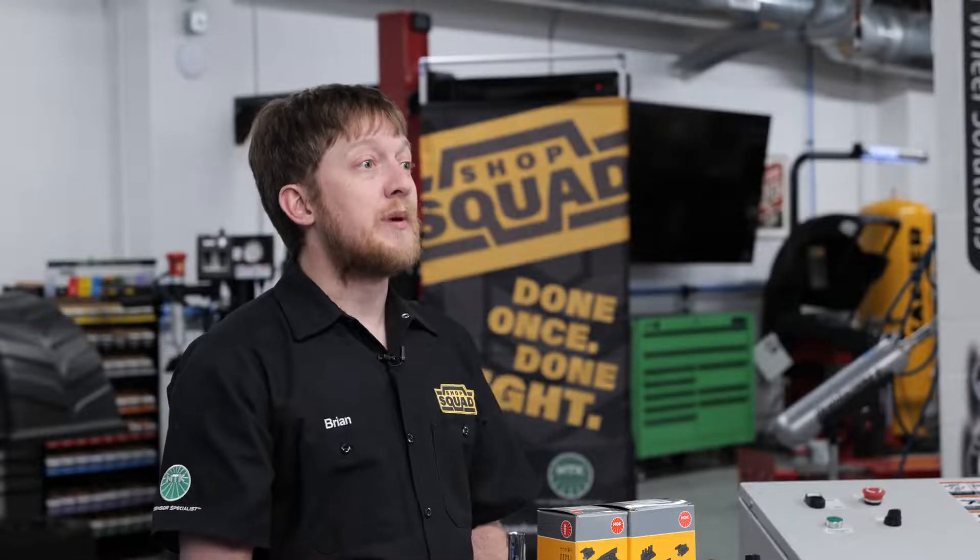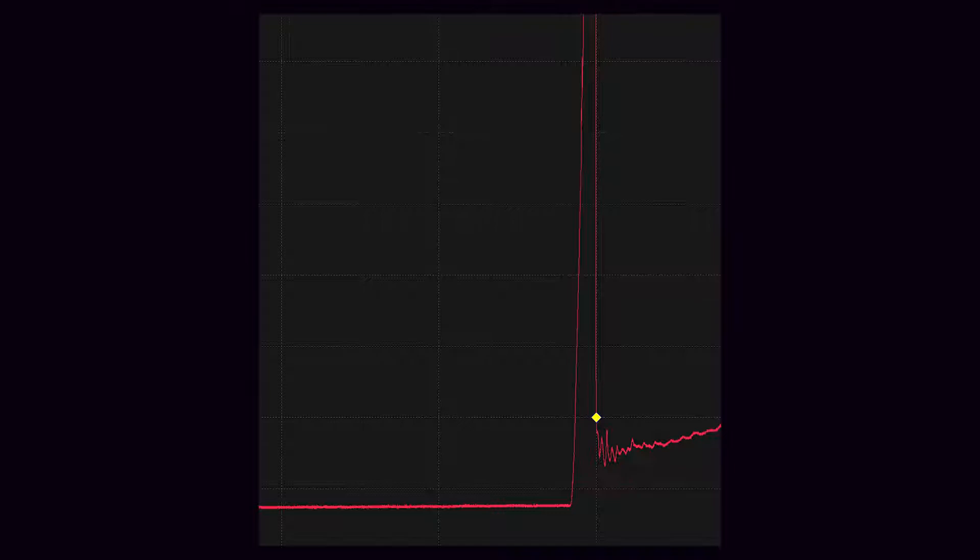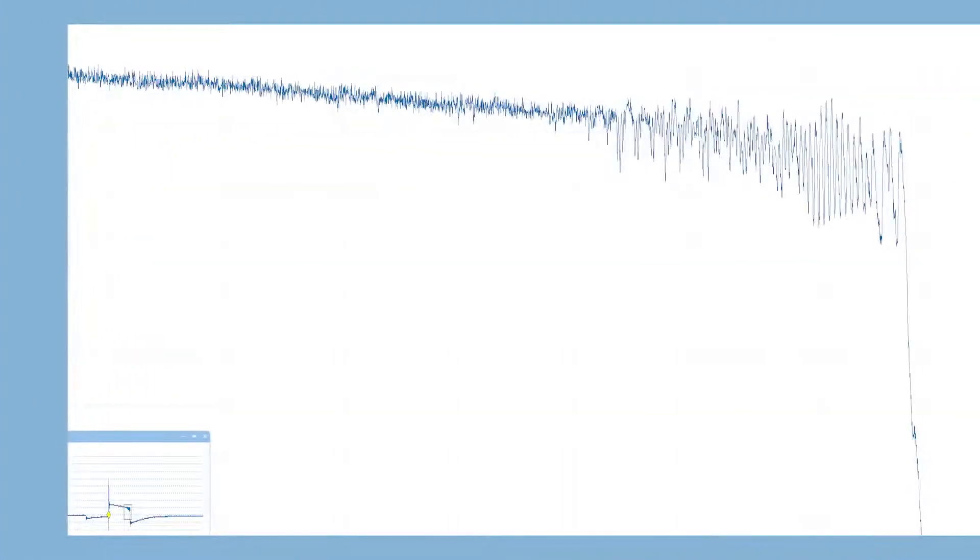A secondary ignition waveform can be broken down into three parts. First, the area of the waveform that shows dwell where the secondary of the coil is saturated with energy from the primary. Second, the spike shows the initial start of the spark between the electrodes. Third, the burn time is the area of the wave where the spark is burning between the electrodes and eventually stops.